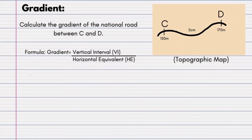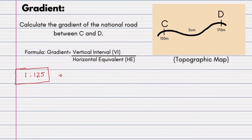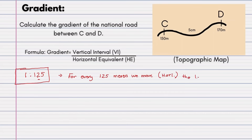Another thing they could ask is what does your answer mean. We got the answer of 1:125. If asked to interpret it, the correct answer would be: for every 125 meters that we move horizontally, the land will rise by 1 meter. That is how you interpret your gradient answer.